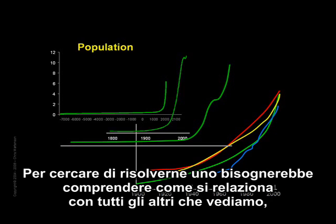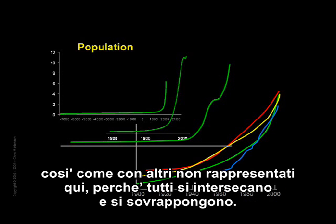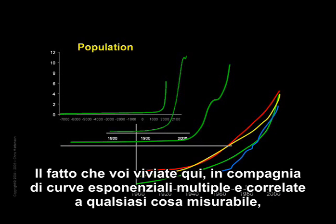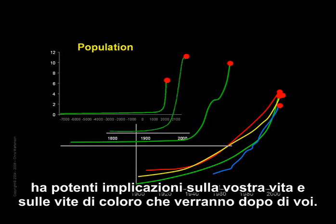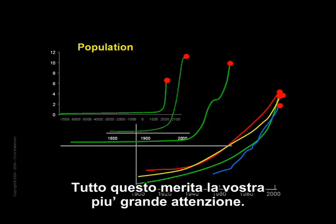To try and solve one, you need to understand how it relates to the other ones that you see, as well as others not displayed here, because they all intersect and overlap. The fact that you live here in the presence of multiple exponential graphs relating to everything from money to population to species extinction has powerful implications for your life and the lives of those who will follow you. It deserves your very highest attention.